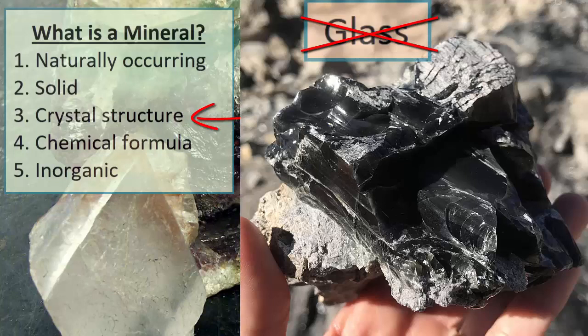Glass, on the other hand, forms as a liquid solidifies too quickly for atoms to bond in any kind of crystalline pattern. All glass, including glass that forms when lava is thrown through the air in a volcanic eruption, is natural and solid but not crystalline and thus not a mineral.